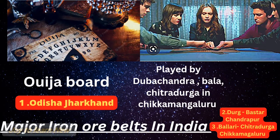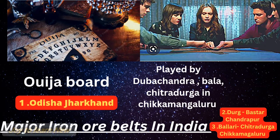The first one, 'Oja Board': O stands for Odisha, Ja stands for Jharkhand. So the first belt is the Odisha-Jharkhand belt. Second, 'Duba Chandra': Du stands for Durg, Ba stands for Bastar, Chandra means Chandrapur — so the Durg-Bastar-Chandrapur belt. Next, Bala-Chitra-Durka-Chikmagalur: that is the Bellary-Chitradurga-Chikmagalur belt.